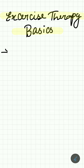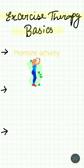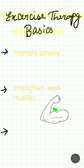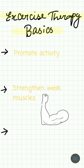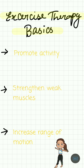Exercise therapy is done for three major purposes. First is to promote activity and reduce the amount of inactivity. Second is to strengthen weak muscles, as muscles with repeated activity become stronger. Third is to increase the range of motion of the joints.